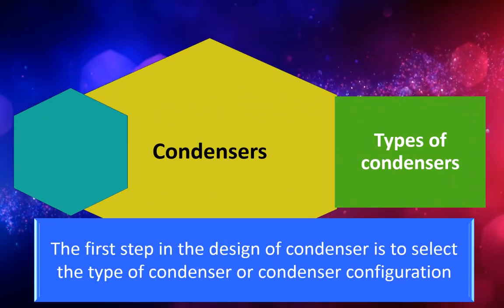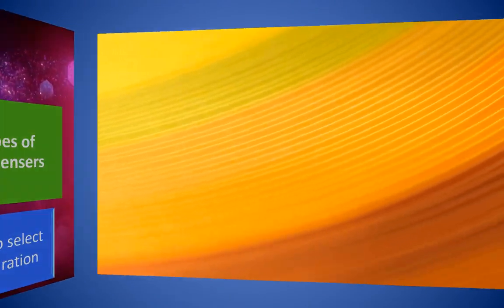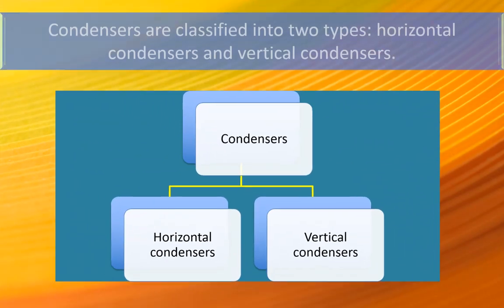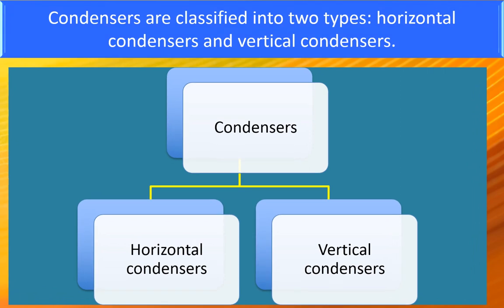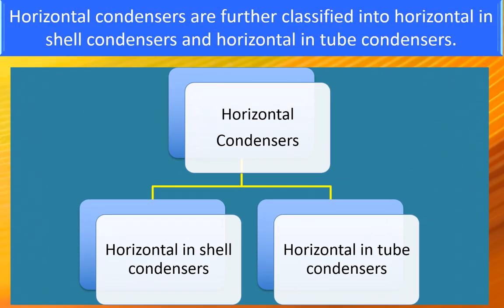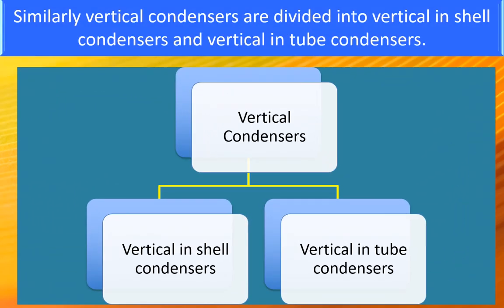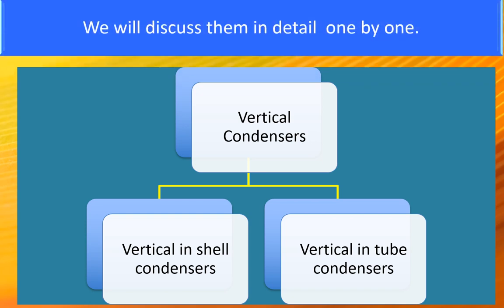The first step in the design of a condenser is to select the type of condenser or condenser configuration. Condensers are classified into two types based on the orientation of tubes: horizontal condensers and vertical condensers. Horizontal condensers are further classified into horizontal in-shell condensers and horizontal in-tube condensers. Similarly, vertical condensers are divided into vertical in-shell condensers and vertical in-tube condensers. We will discuss them in detail one by one.